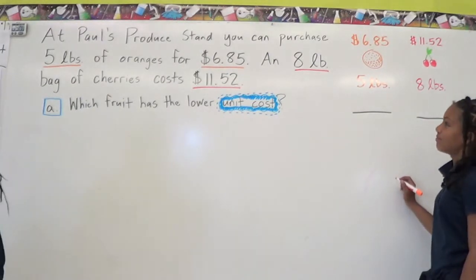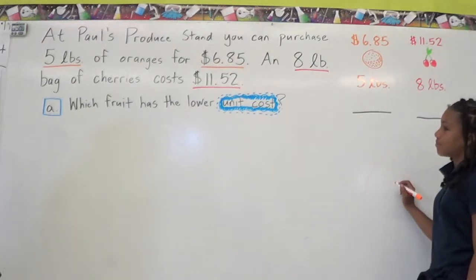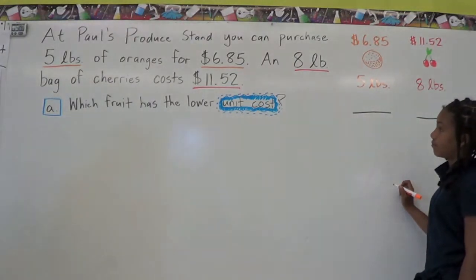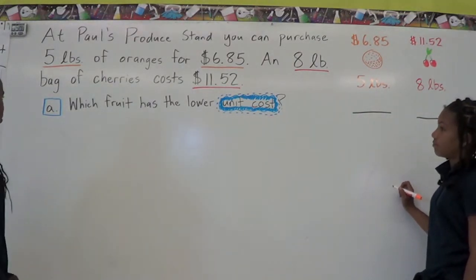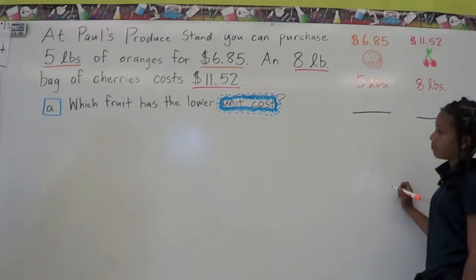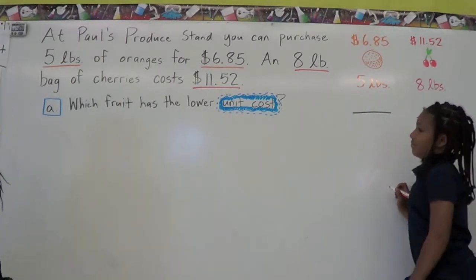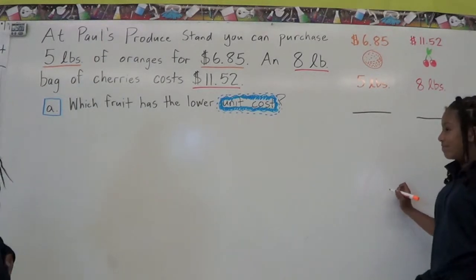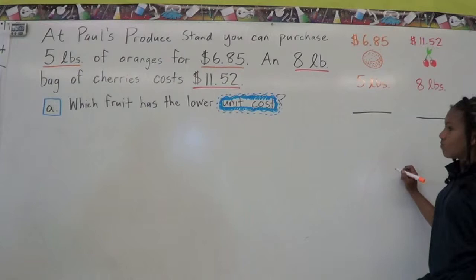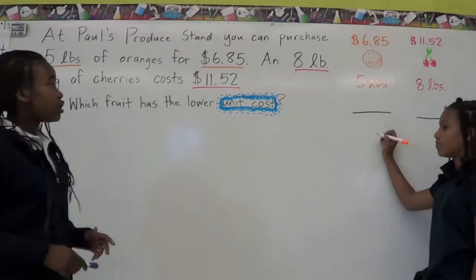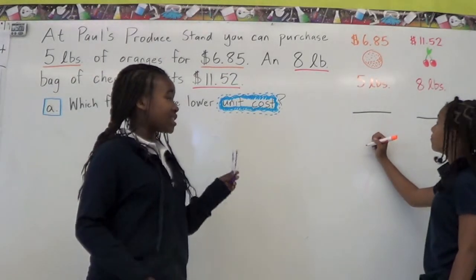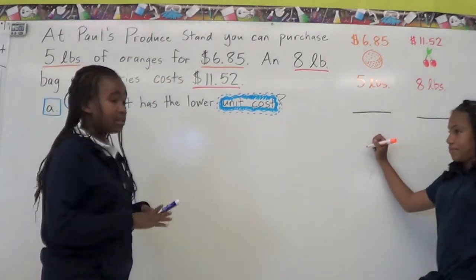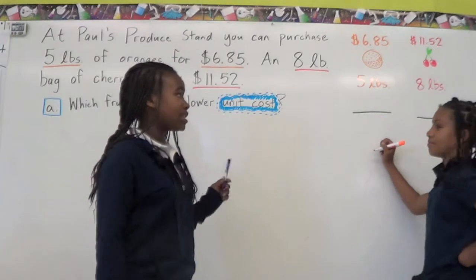At Paul's Produce, you can purchase 5 pounds of oranges for $6.85 and an 8-pound bag of cherries for $11.52. Which fruit has a lower unit cost? The first thing we're going to do is long division: $6.85 divided by 5, and $11.52 divided by 8.